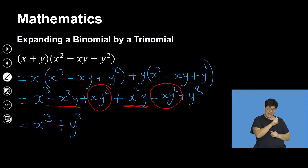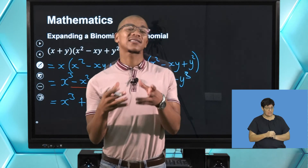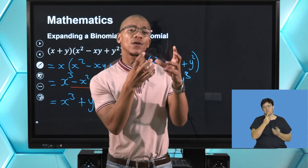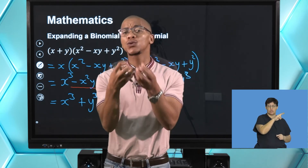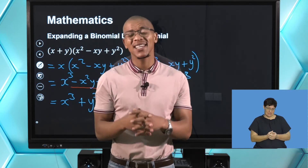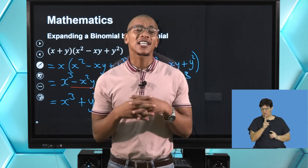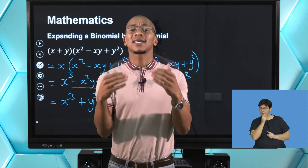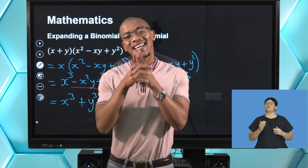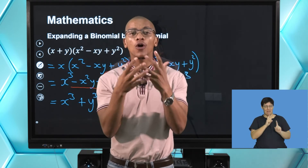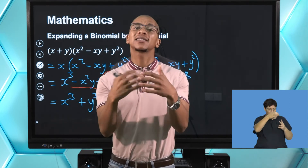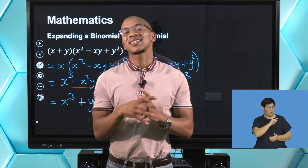So the final answer is x cubed plus y cubed — this is the sum of two cubes. The first term is a cube and the second term is a cube, being added together. At a later stage with other lessons, we'll look at what exactly cubes are and how to reverse things. But for now, take a quick break and I'll be back with some questions to bring all of this into perspective.